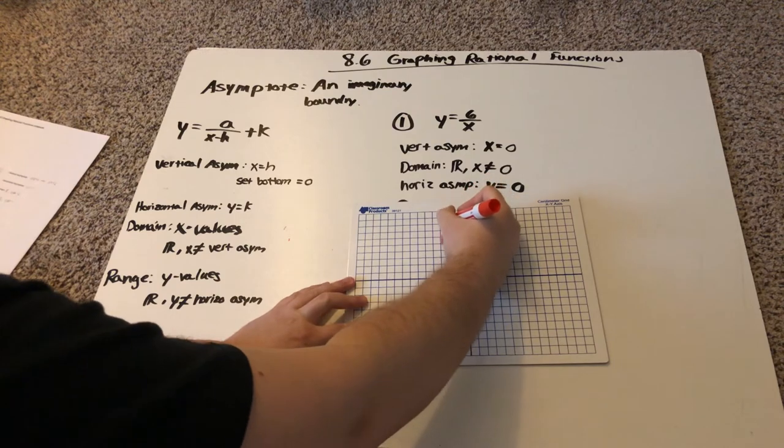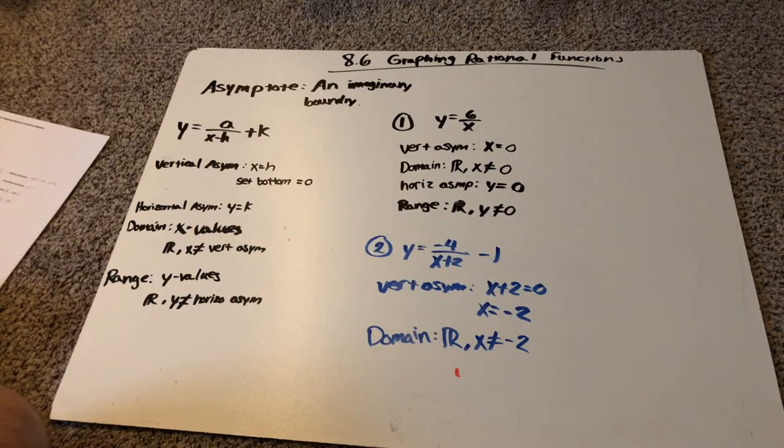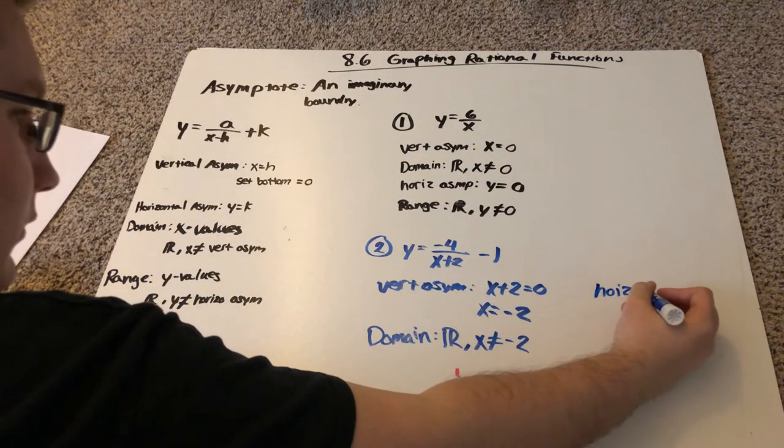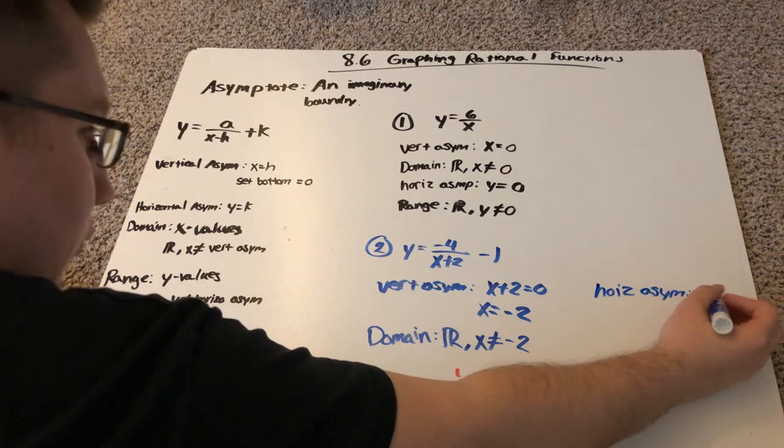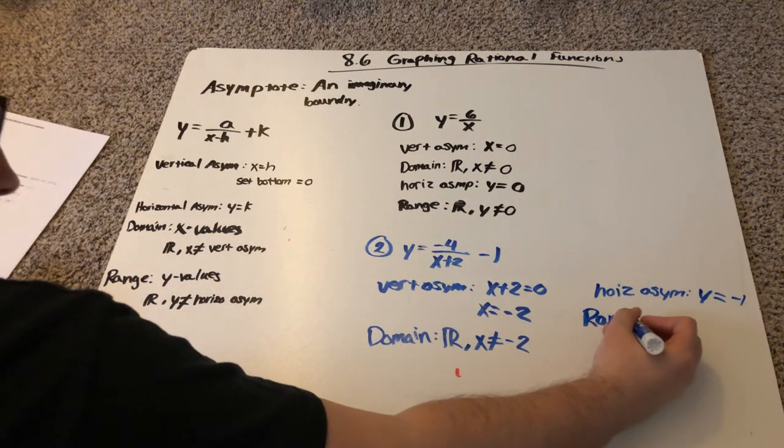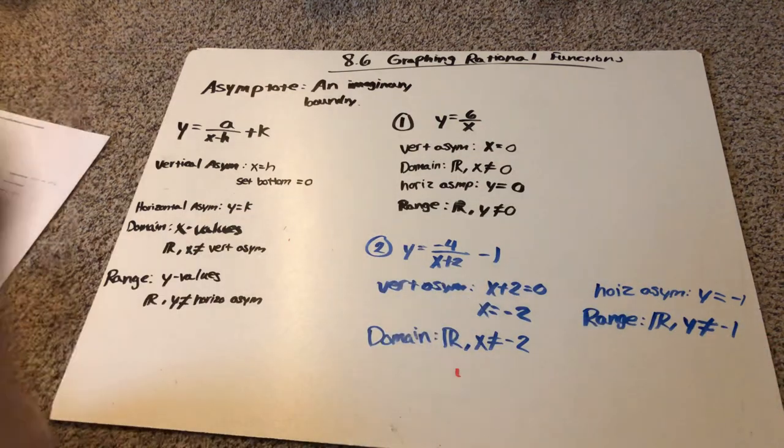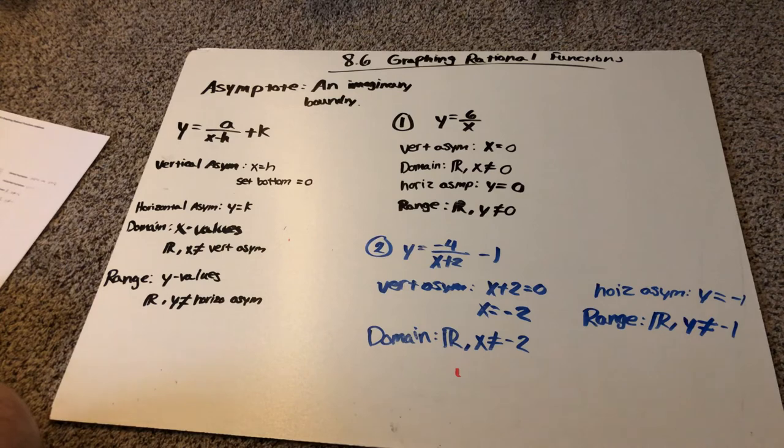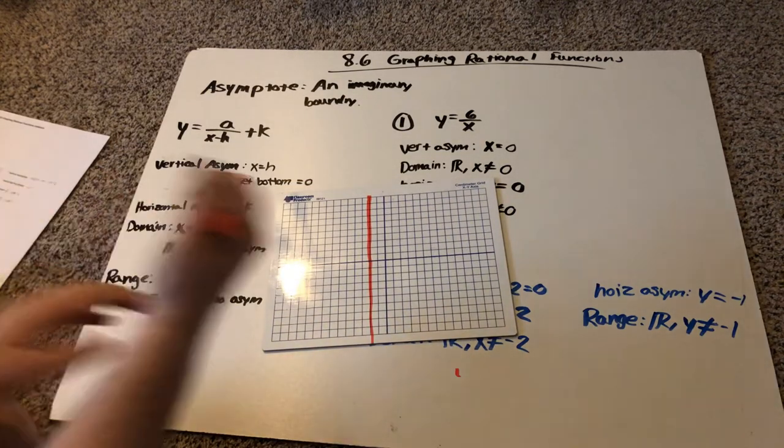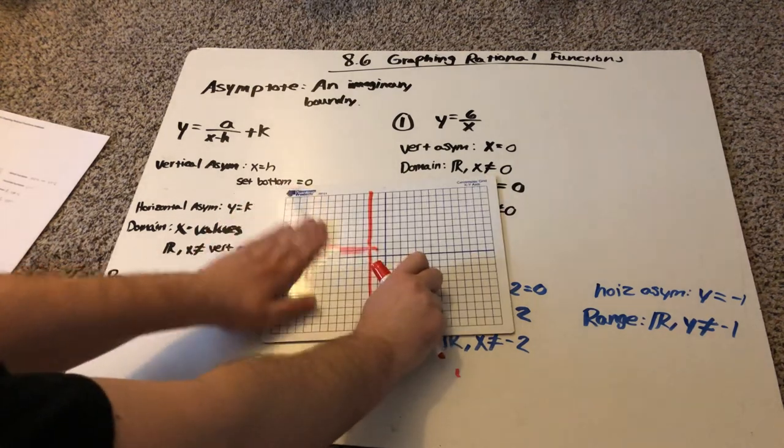So for my horizontal asymptote, I have y is equal to the very last number. I got a negative one here. So negative one. So for my range, it is all real numbers except whatever the horizontal asymptote is, y cannot be negative one. So I'm going to draw a line at y equals negative one. Oops. Negative one, not positive one. That was dumb.